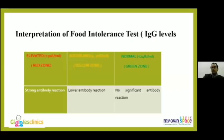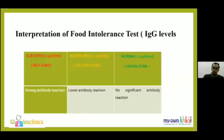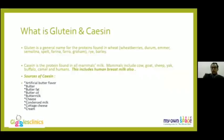A child with intolerance levels above 30 is considered elevated. Levels around 70 are slightly elevated, while levels above 100 indicate very high intolerance. Based on these levels, we can predict whether a child requires a gluten-free or casein-free diet and for how long. This is the value of going for an intolerance test.